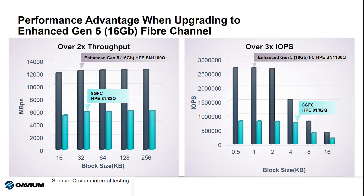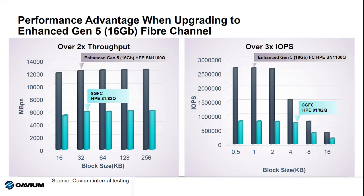In this graph, the performance of the enhanced Gen5 16GB fiber channel adapters is compared against the previous generation of 8GB fiber channel adapters. As you can see, going from 8GB to 16GB fiber channel gives you twice the throughput and more than three times the IOPs, dependent upon the block size. A significant performance advantage is even gained at the traditional 4K and 8K block sizes used by most enterprise applications. The reason for this improvement is that the ASICs in the newer generation adapters are much more efficient and faster, enabling the tripling of IOPs and the expanding of throughput capability.